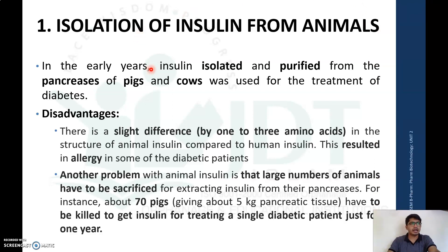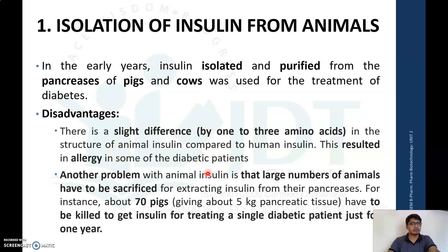The first method — isolation of insulin from animals — was used in early years. Insulin was isolated and purified from the pancreas of pigs and cows and used for the treatment of diabetes mellitus. But this is not used nowadays because of two major disadvantages: first, there is a slight difference of 1–2 amino acids in the structure of animal insulin compared with human insulin.